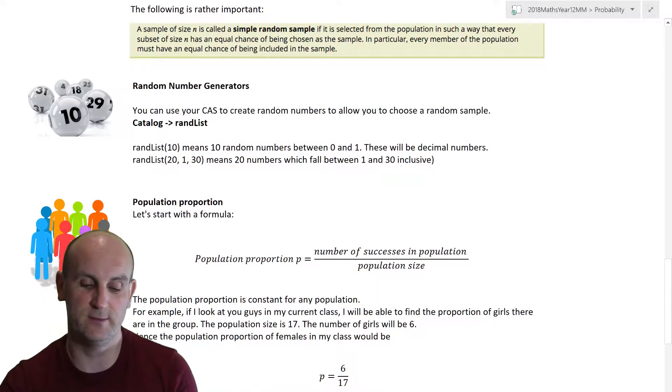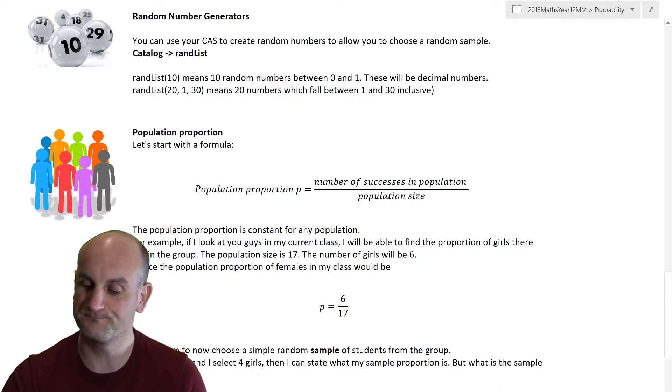So choosing a sample size, as I've got a section here from the Cambridge Essentials textbook, which is what I'm teaching from, a sample of size n is called a simple random sample if it is selected from the population in such a way that every subset of size n has an equal chance of being chosen as the sample. So every single person has an equal chance of being chosen. In particular, every member of the population must have an equal chance of being included in the sample.